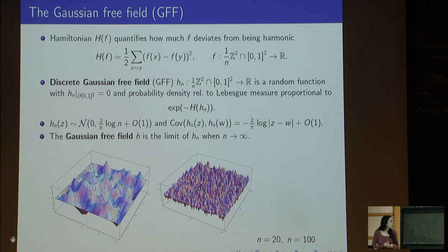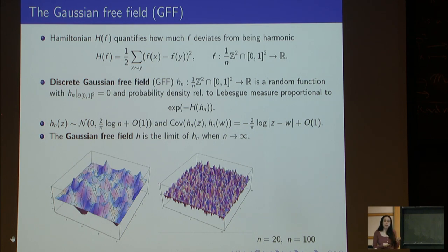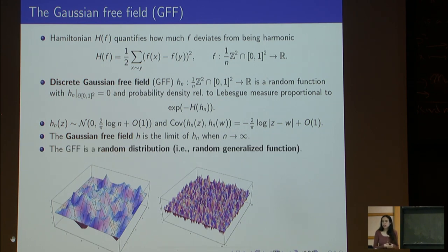One way to define the continuum Gaussian free field is as the limit of the discrete Gaussian free field when the lattice size goes to zero. At any fixed point the variance diverges when n goes to infinity, so it's not obvious how to make sense of this limiting object. In particular, the Gaussian free field is too rough and irregular to be well-defined as a function — it's not defined pointwise. However, it does make sense as a random distribution or generalized function; it can be integrated against test functions.